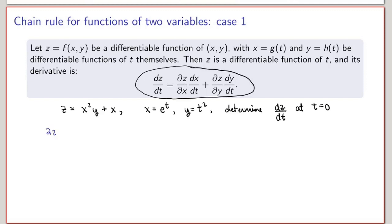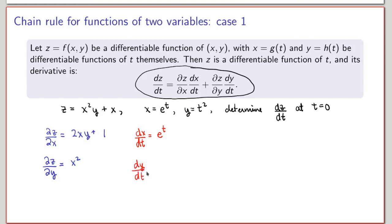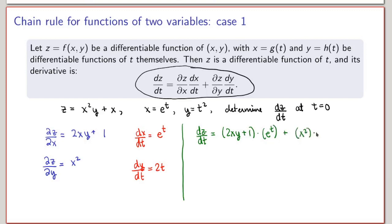Let me first calculate the partial derivatives. So ∂z/∂x will be equal to 2xy plus 1, while ∂z/∂y will be equal to x squared. Next, I need the derivatives of x and y with respect to t: dx/dt equals e to the t, and dy/dt equals 2t. Putting this together, the derivative of z with respect to t equals (2xy + 1) times e to the t, plus x squared times 2t.